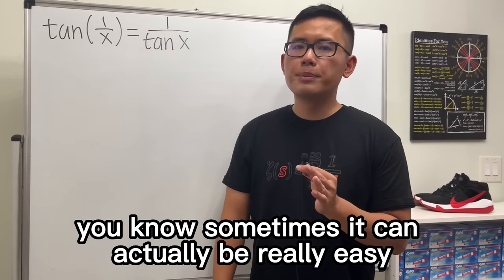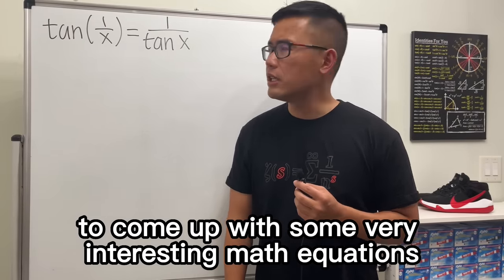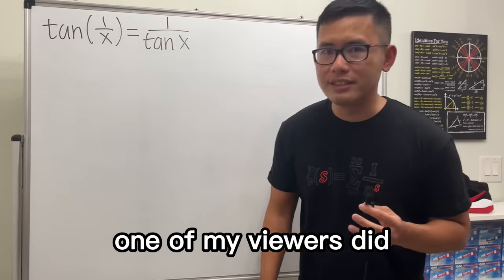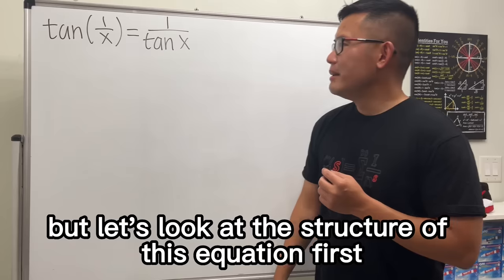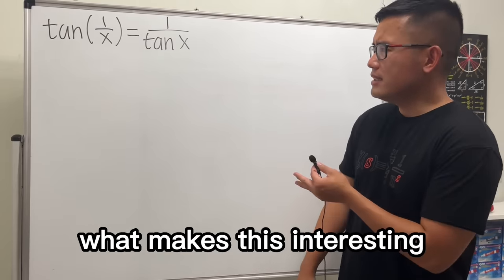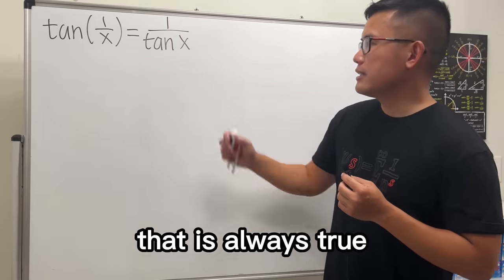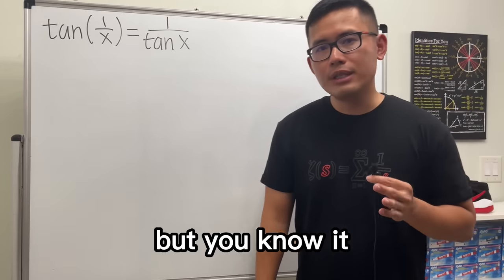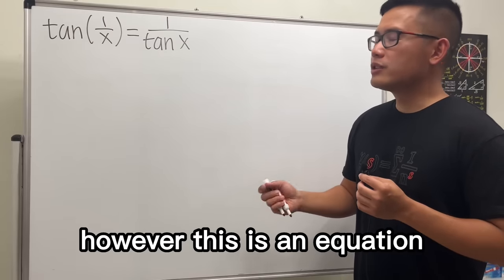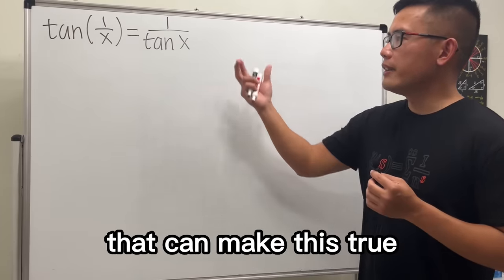Sometimes it can actually be really easy to come up with some very interesting math equations — for example this one right here, but I didn't come up with this one; one of my viewers did, so thank you. Let's look at the structure of this equation first. What makes this interesting is that it looks like an identity, meaning it looks like it's always true, but that is not the case. However, this is an equation where we will actually be able to find some x values that make it true.